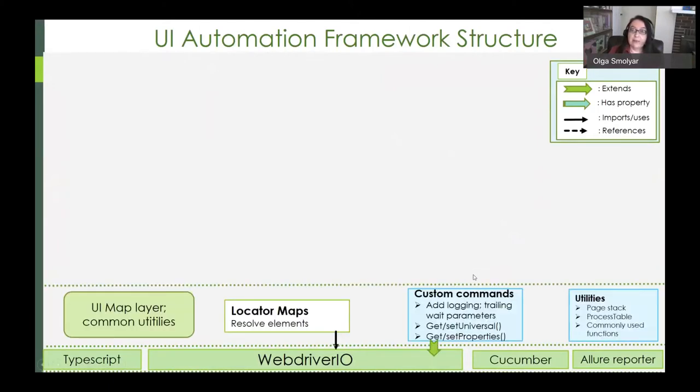Next is the UI map layer, which contains locator maps that resolve elements based on selectors and give them names. Additionally, we define custom commands to extend WebDriver.io, to add logging and optional parameters, as well as new commands, such as get and set universal, get and set properties, set checkbox and radio, and many others. We also define common utilities, including page stack and process table, and other commonly used functions. These rectangles shaded in blue are part of a common repository that teams can map their code to, to take advantage of the latest developments in common code.